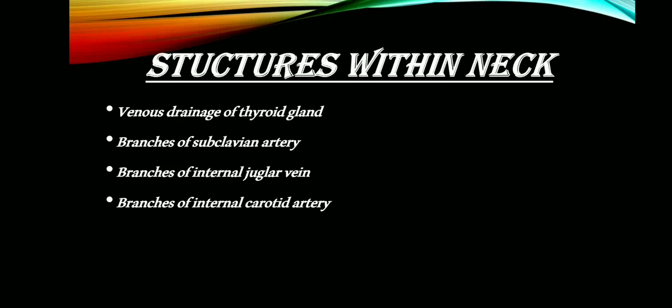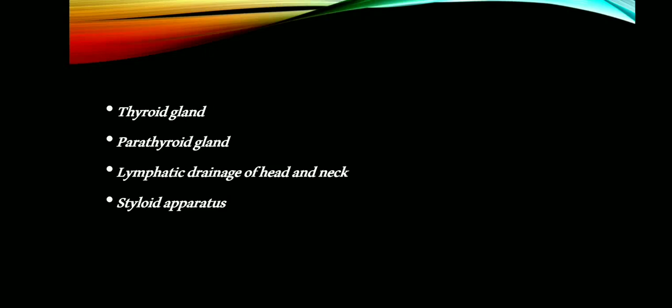Moving on to the chapter: structures present within the neck. From this chapter, enumerate questions like venous drainage of thyroid gland, branches of subclavian artery, branches of internal jugular vein, and branches of internal carotid artery — all these questions are important. Long question on thyroid gland is very, very important. Long question on parathyroid gland is not that important. Long question on lymphatic drainage of head and neck is also not that important. A short note on styloid apparatus can also be asked.